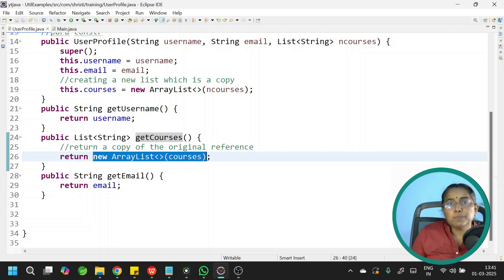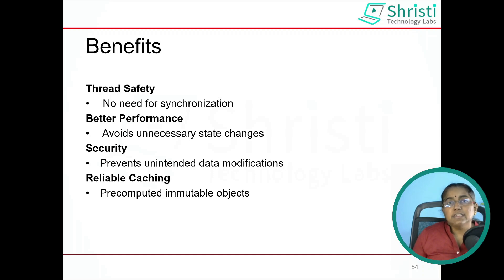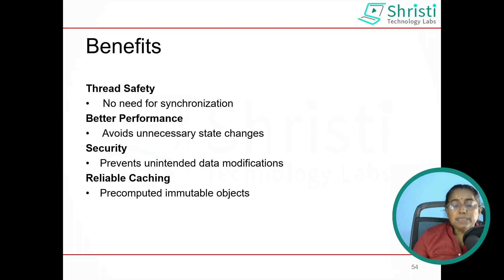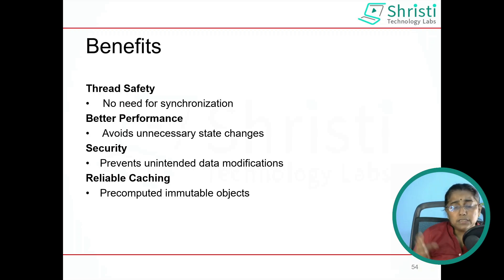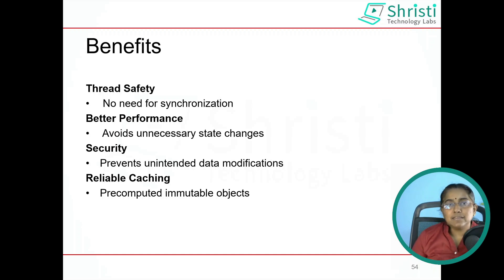Now let us quickly see the benefits of using an immutable class. First is thread safety — when you create an immutable class, the objects cannot be modified, so all threads can share the same values of that object and you don't have to use synchronization, giving better performance. It also avoids unnecessary changes to instance variables. Security — it prevents unintended data modification. Reliable caching — when working in applications, you need to cache data that should not be modified at any point. In these scenarios, using immutable classes is of great help. That's all about immutable classes. Thank you.